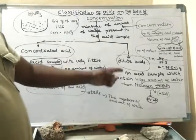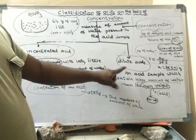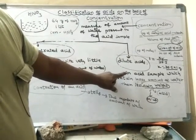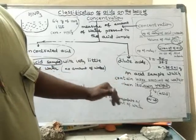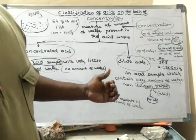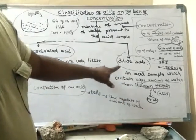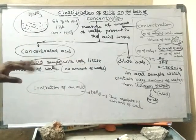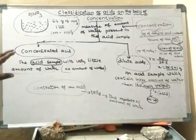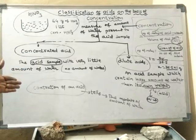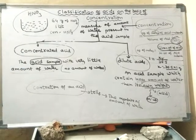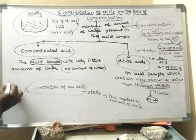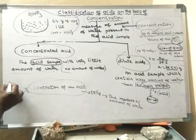If the amount of water is more, then the concentration of acid will be less — in that case, it is called dilute acid. If the amount of water is less, then the concentration of the acid will be more. Concentration of acid is inversely proportional to amount of water.